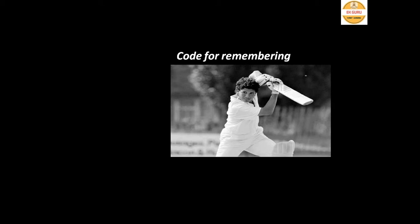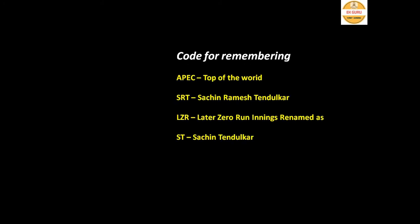A simple code for remembering these characteristics uses Sachin Tendulkar. We know Sachin Tendulkar is top of the world in the field of cricket. In earlier days his full name was Sachin Ramesh Tendulkar. We will use that as the basis of our mnemonic code. The story goes that initially his name was Sachin Ramesh Tendulkar, and later after a zero-run innings he renamed himself Sachin Tendulkar — this is just an assumed story for memory purposes.